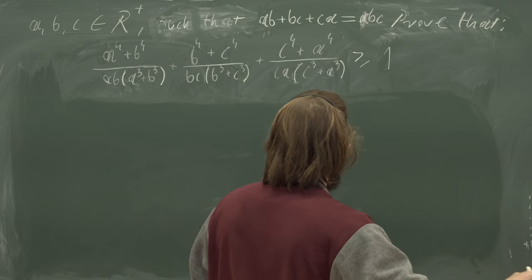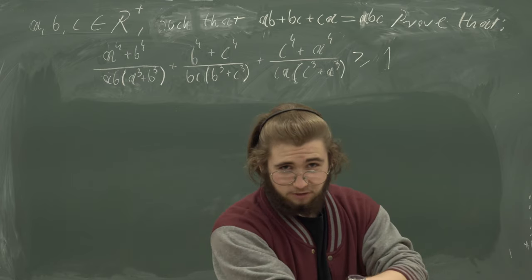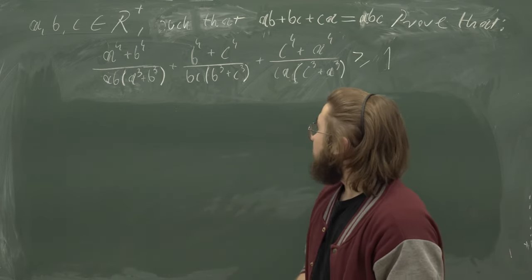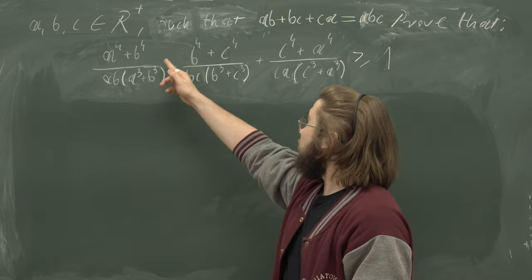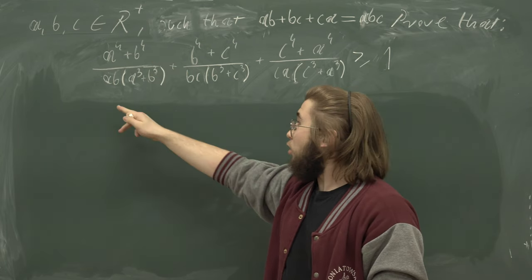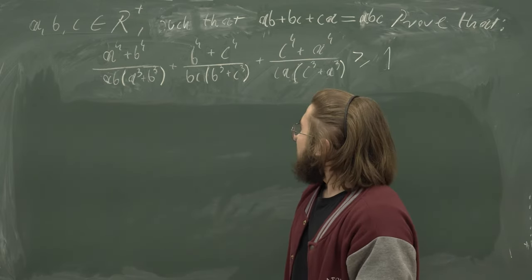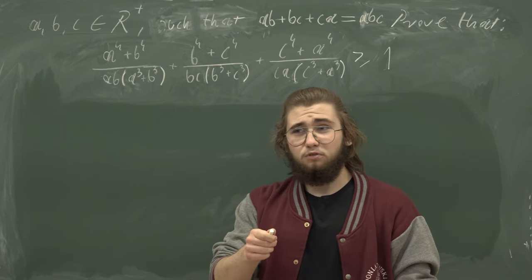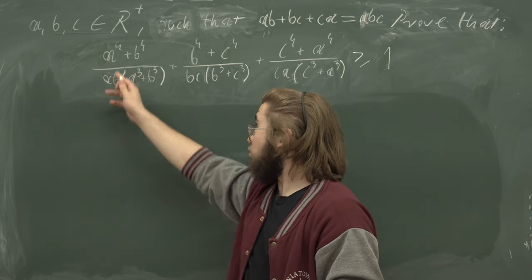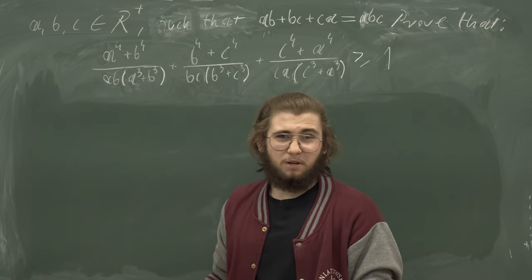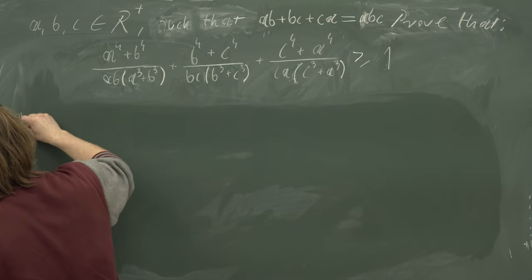So how are we supposed to do this? Well, we have fractions here, and everybody hates fractions — especially me. How do we eliminate those? We could use some kind of Cauchy-Schwarz because we have even powers in the numerators, but I think dealing with all those denominators together is going to be a pain. Maybe it would be a nice idea to substitute some kind of fractions for a, b, and c.